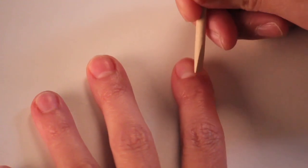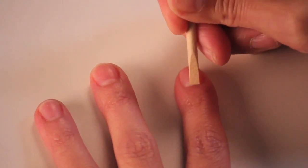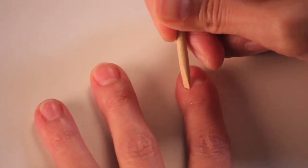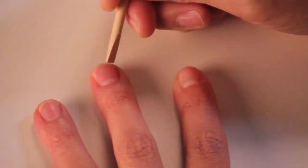It's now time to prep those nails. Go ahead and grab your orange wood stick and gently push back the cuticles on all five fingers.